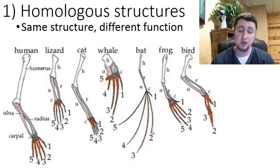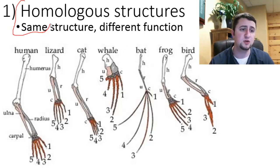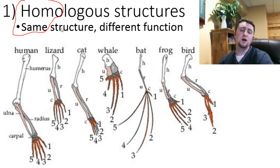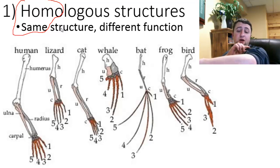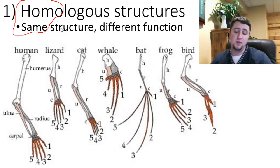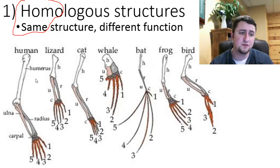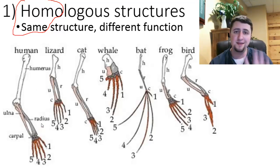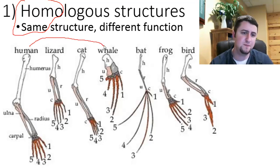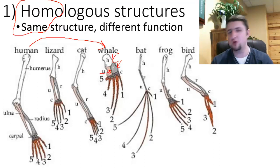One of those things is what we call homologous structures. I really want to emphasize the term 'homo,' which means 'same.' If we take a look at the upper arm bone of many different types of animals — the upper arm bone of human beings, you may be familiar with the humerus, the radius and ulna, and then the five different phalanges. If we take a human being and compare it to, say, a whale, even though the humerus and radius and ulna are sort of smushed together, they're still structured in very similar ways.